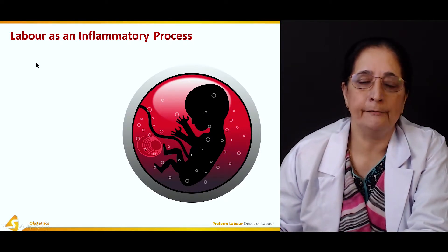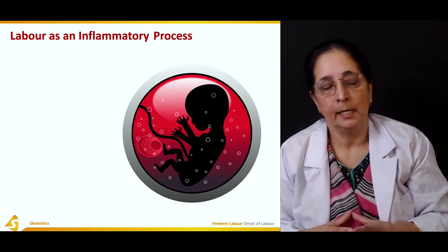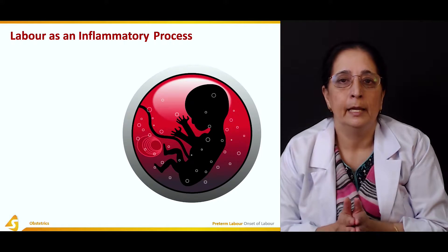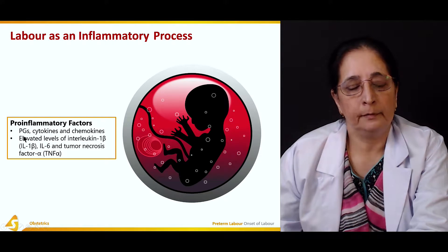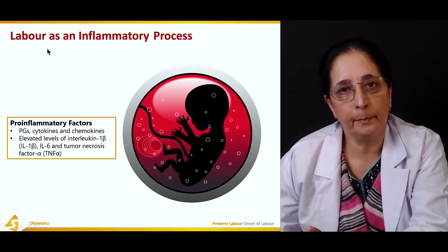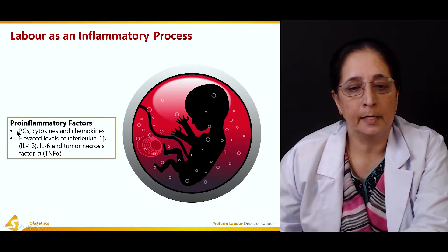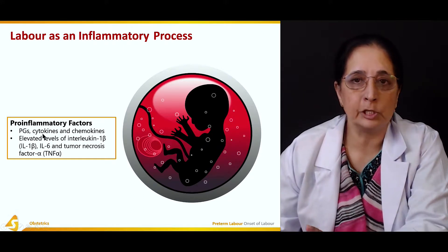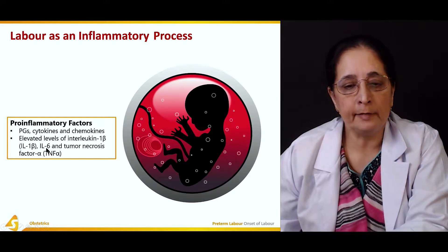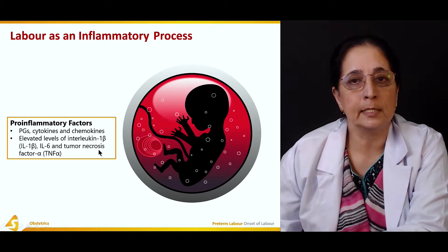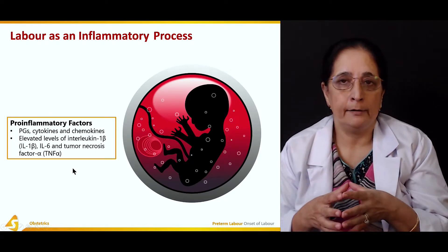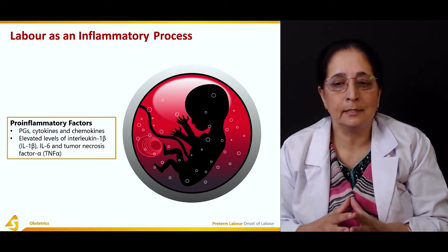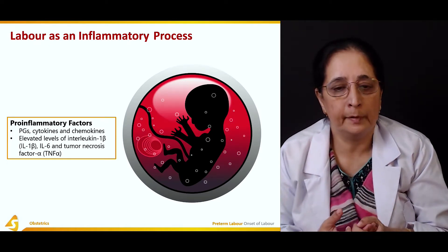Labor is considered an inflammatory process. Some steps that occur with the onset of labor resemble those seen during inflammation. There is production of factors like prostaglandin synthetase, cytokines, and chemokines. Elevated levels of interleukins and tumor necrosis factor are seen in both the inflammatory process and in labor, showing resemblance between the onset of labor and inflammation.